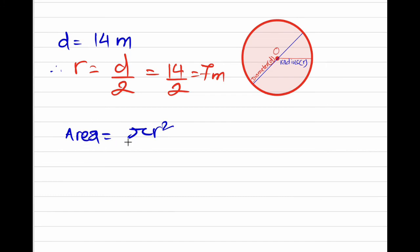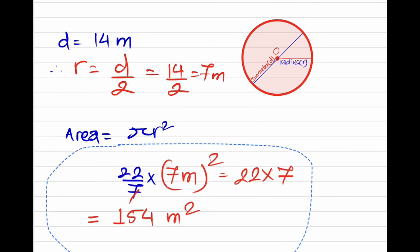Area of a circle is πr². Substituting the values, π is 22/7, our radius is 7 meters, and the square comes from the formula.